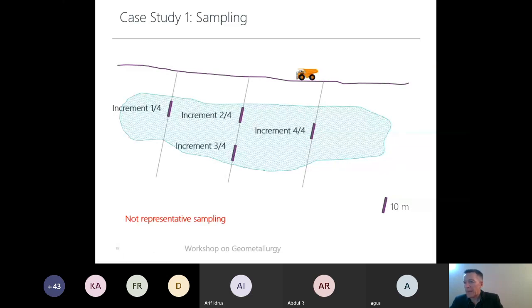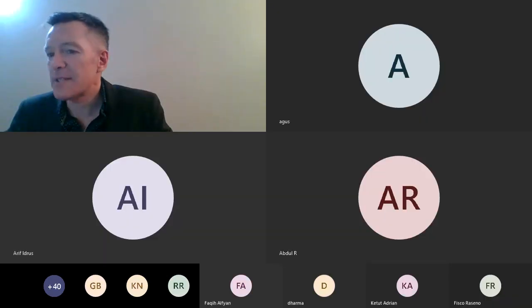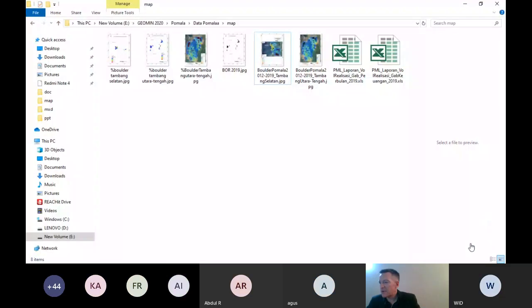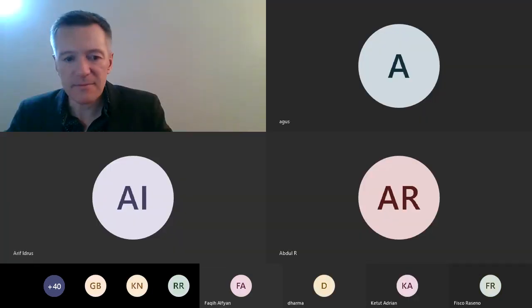If we can see here, this is increment. Do you know the term increment? Increments create one sample. We have four operations of sampling for creating one sample. So we are mixing.